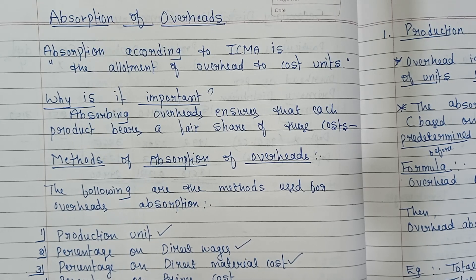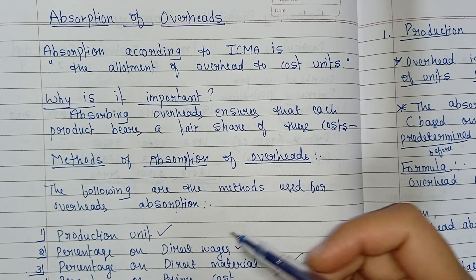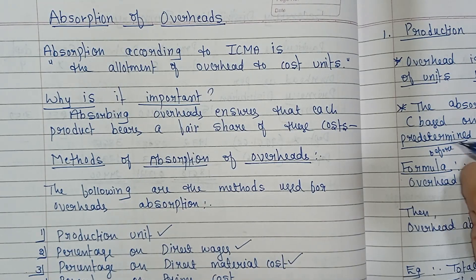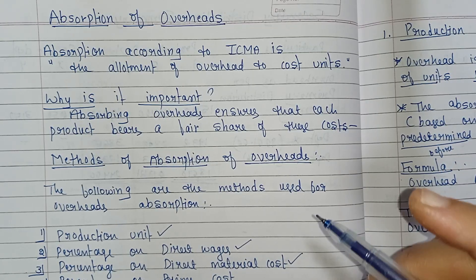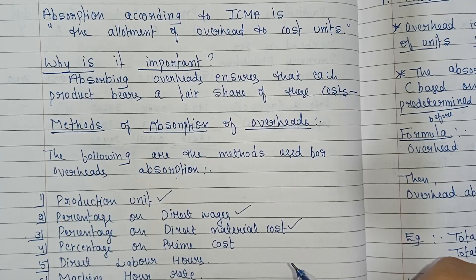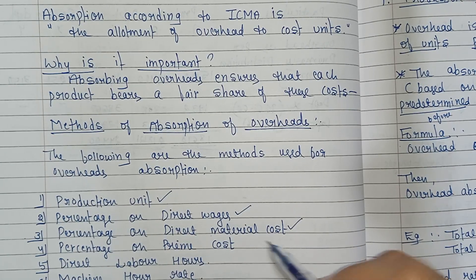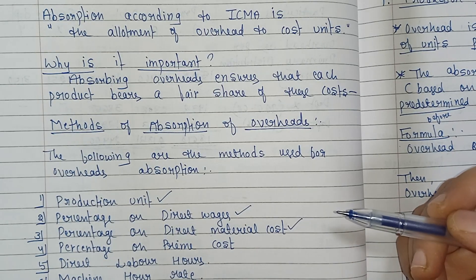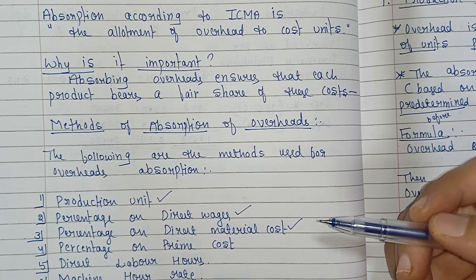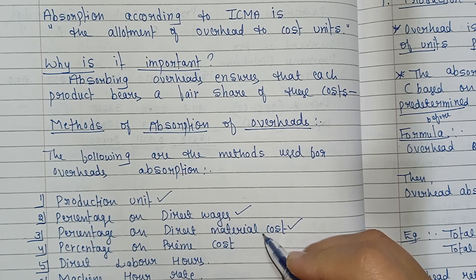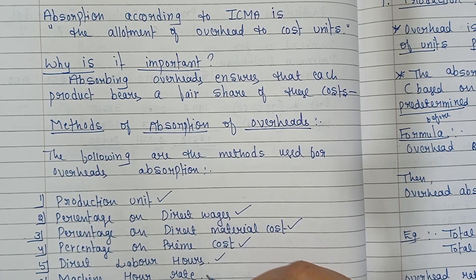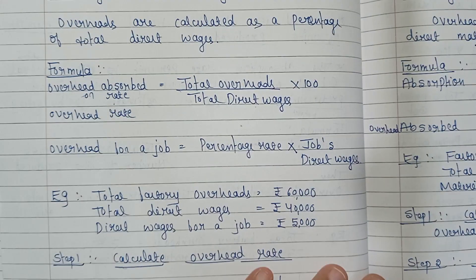Hello everyone, welcome back to my YouTube channel. In the last class we learned about absorption of overheads — the allotment of overheads to the cost unit. We discussed three methods: production unit, percentage on direct wages, and percentage on direct material cost. Today we are going to continue this topic and discuss the remaining three methods: percentage on prime cost, direct labor hours, and machine hour rate.